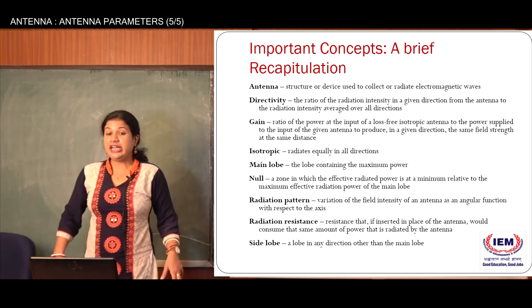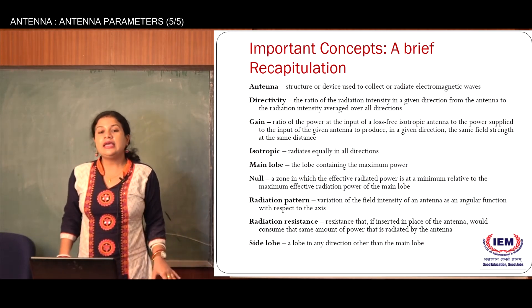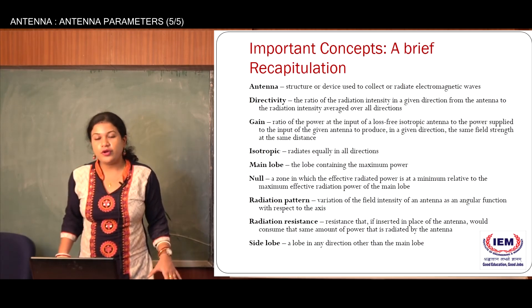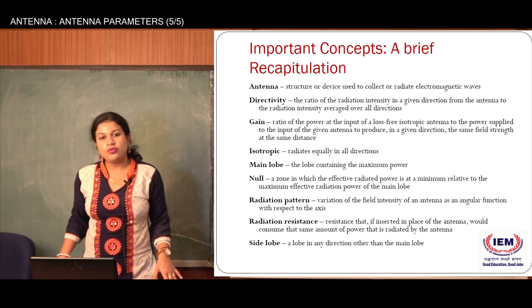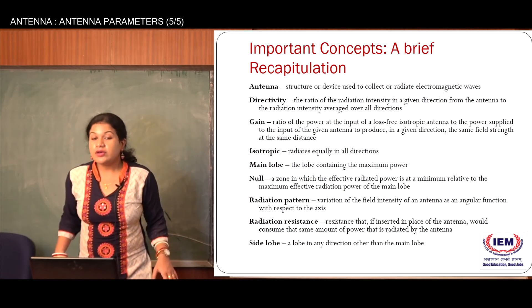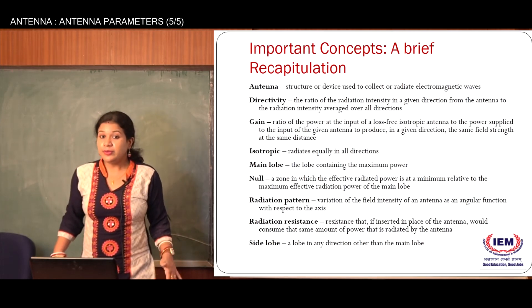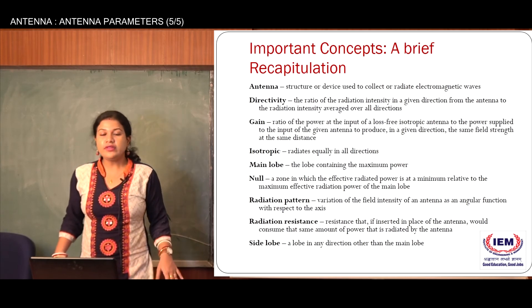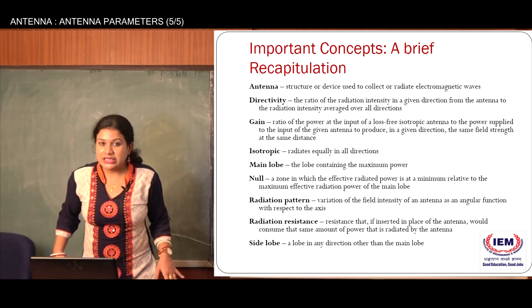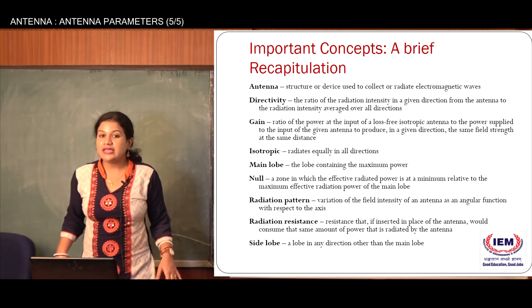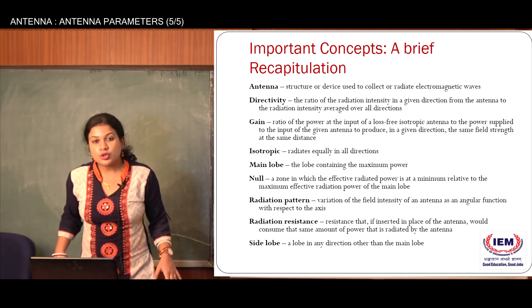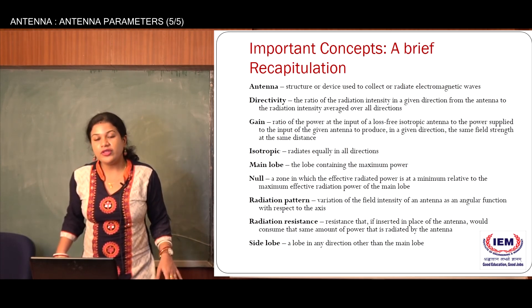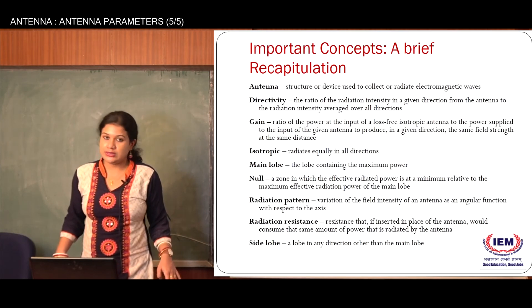We discussed radiation resistance. Since the antenna radiates power and current flows through it, there is a resistance relating power and current — this is called radiation resistance. Radiation resistance equals the radiated power divided by the square of the current flowing through the antenna. It is one of the key parameters required for antenna design.